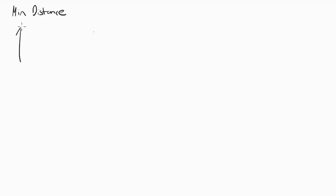We're going to do an optimization problem today where we're going to minimize the distance between the point (2, 0) and the curve y equals radical x on the Cartesian plane. I'm going to write down what I want to do, which is minimize distance, and draw a rough sketch of the situation. We've got our x-y plane, and I'm going to sketch y equals radical x. The point (2, 0) would be somewhere over here, and basically what I want to do is find out where the point on y equals radical x would be so that the distance between (2, 0) and that point is a minimum.